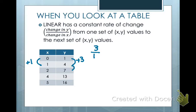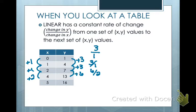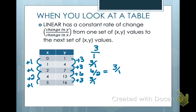Let's take a look at the next one. Here I have a plus 3 and a plus 1 — that's a 3 to 1 change. Let's go to the next one. I have a plus 6 and a plus 2, so my y value changed by 6 and my x value changed by 2. Remember, we always have to reduce fractions, so if I reduce that fraction, it is a 3 to 1 rate of change. So this is a linear table — the data represents a linear function because it has a constant rate of change.